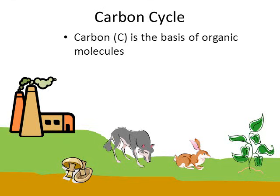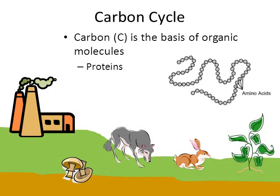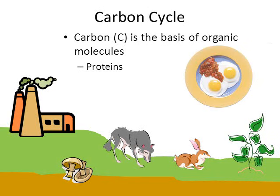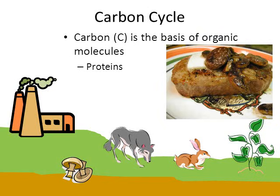When we look at the carbon cycle, one thing to remind ourselves is that carbon — the element called carbon — is the basis of organic molecules. There are four broad categories of organic molecules, the first being proteins. The picture can remind you that proteins are made from long chains of amino acids. Foods that are high in protein include fish, eggs, and steaks.